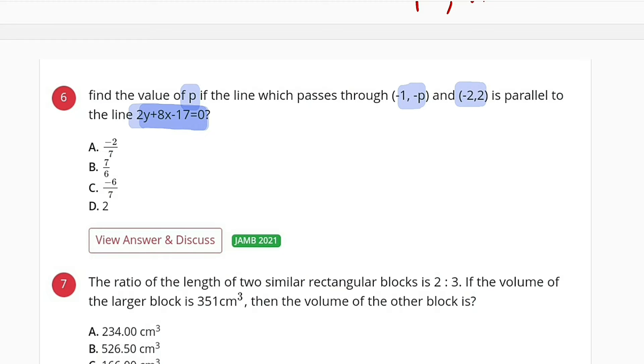We take every term to the right-hand side except y. Let me clean this first. We have 2y to the left and we take 8x to the right, it becomes negative 8x. We take negative 17 to the right, it becomes positive 17.